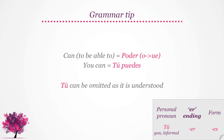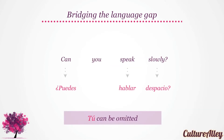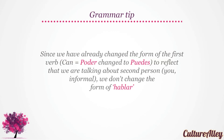Tú can be omitted as it is understood. Hence, our word by word translation becomes, can as puedes, speak as hablar, and slowly as despacio. As we saw, tú can be omitted. Since we have already changed the form of the first verb, which is can — remember that poder changed to puedes to reflect that we are talking about second person or you.